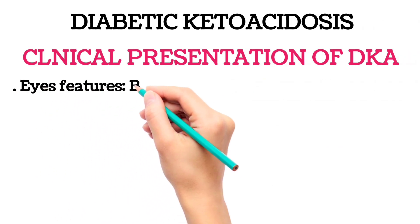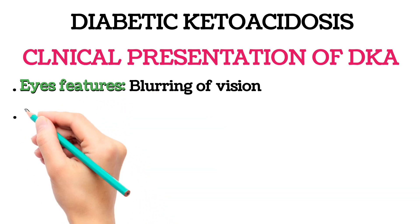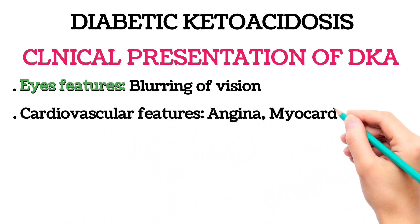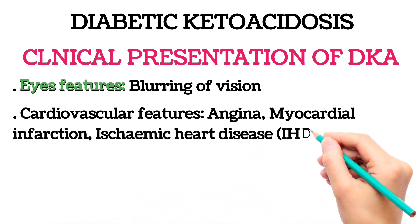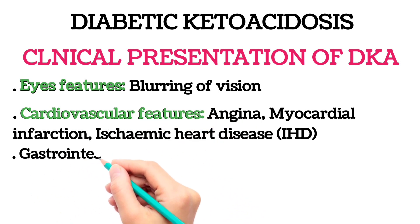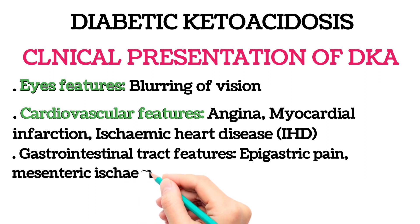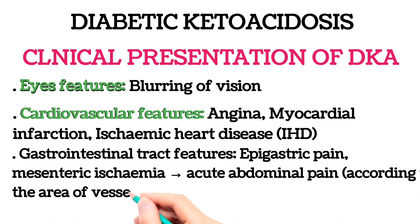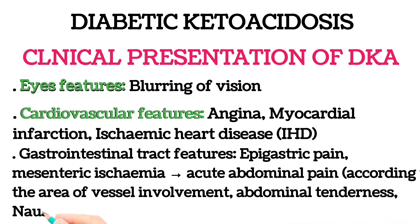Eye features include blurring of vision. Cardiovascular features include angina, myocardial infarction, and ischemic heart disease. Gastrointestinal features include epigastric pain, mesenteric ischemia leading to acute abdominal pain according to the area of vessel involvement, abdominal tenderness, nausea, and vomiting.